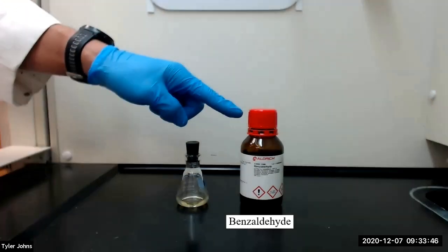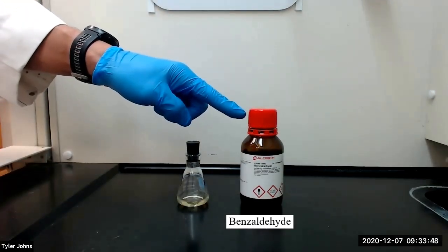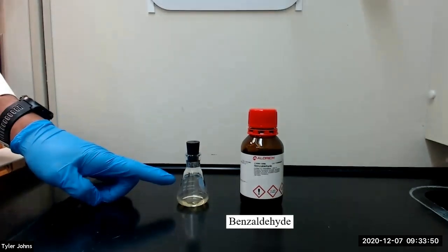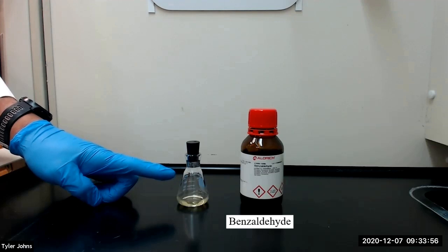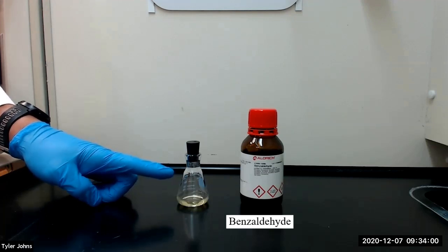We will next add 0.9 milliliters of fresh benzaldehyde to the Erlenmeyer flask and swirl until the contents are homogenous. We will then re-weigh the flask plus the solution in order to determine an accurate weight of the benzaldehyde that was added to the flask.